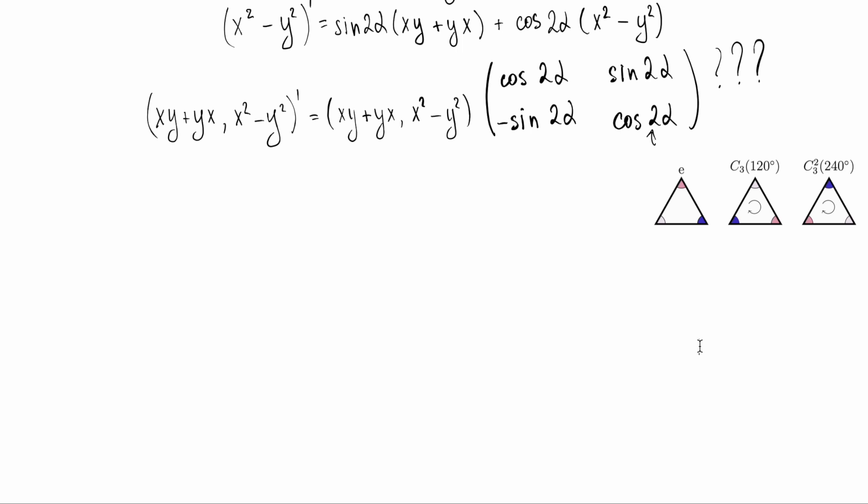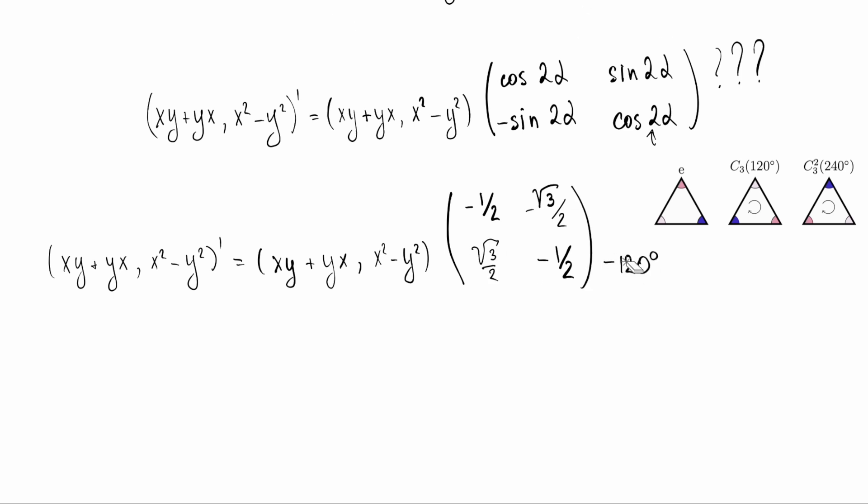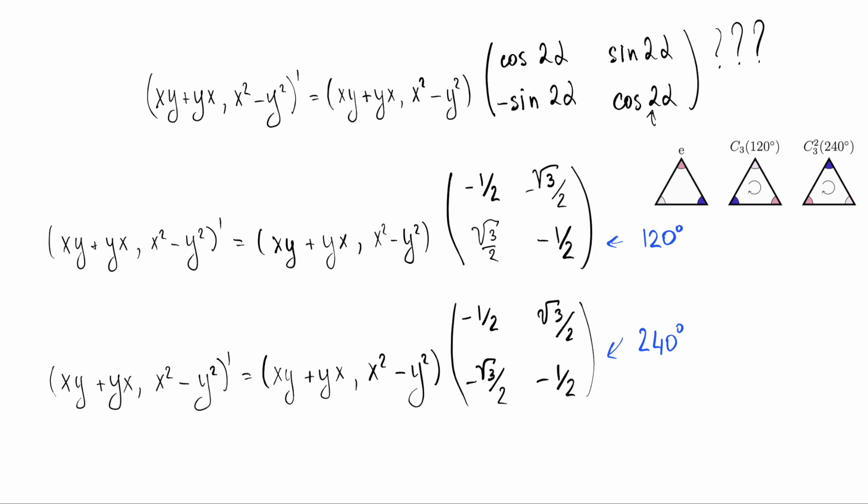So, earlier we discussed how functions behave under arbitrary rotations in plane. Now, let's look at how they behave under specific rotations of the triangle symmetry group, that is, under rotation by 120 degrees, and write down the corresponding rotation matrix. They look as follows.